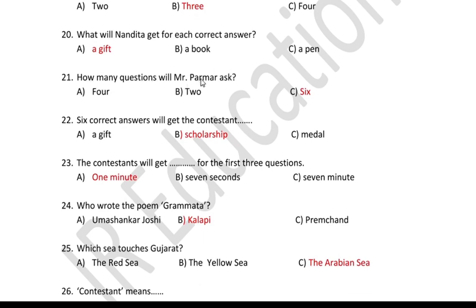How many questions will Mr. Parmar ask? Shrivan Parmar, 6 questions will be asked for you. 6 correct answers will get the contestant a prize. The contestants will get 1 minute for the first 3 questions.